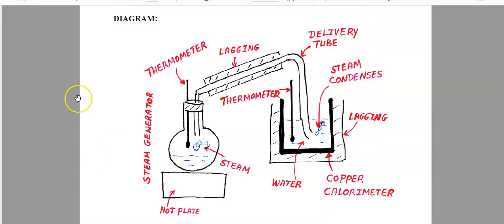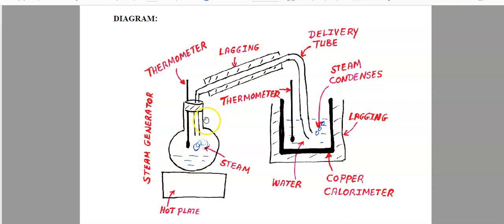Now we're going to take a more detailed look at the equipment and its setup. This part of the equipment is known as a steam generator — it is a round-bottom flask in which water is boiled and converted into steam, using an electric hot plate or a Bunsen burner. We will know the temperature of the steam because we measure it with a thermometer placed in the steam and not in the boiling water underneath.